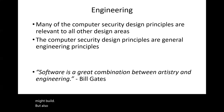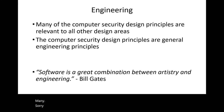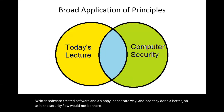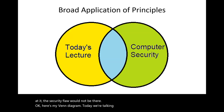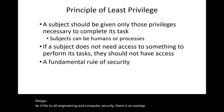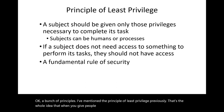Many software security problems are the result of poor software engineering — people created software in a sloppy, haphazard way, and had they done a better job, the security flaw would not be there. The principle of least privilege is one I've mentioned previously — the idea is that when you give people authorization to do something, you only give them privileges to do what they need to get their job done. Don't give them more privileges than they need.